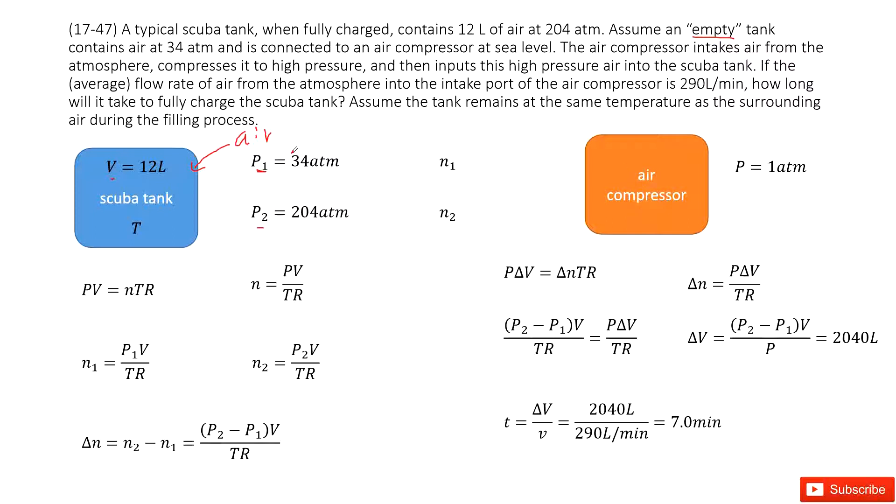So first step, we need to find out how much air we need to fill this tank. And then we divide by this speed, we can get the time. So first step, we look at how much air we need. Now we look at ideal gas law, PV equal to nTR. Therefore, we can write the function for n. n is the molar number of gas, PV divided by TR.